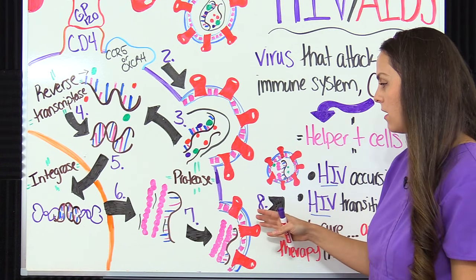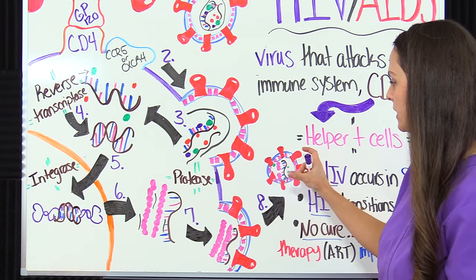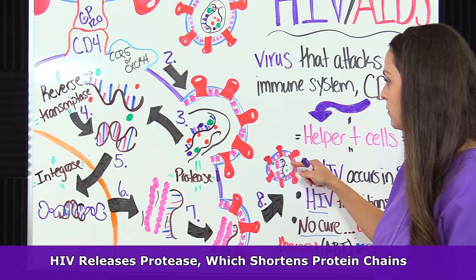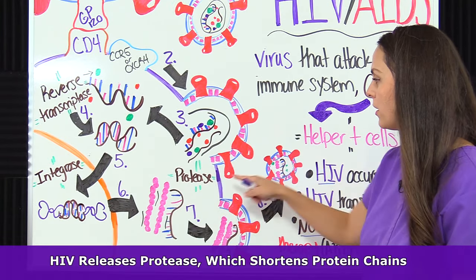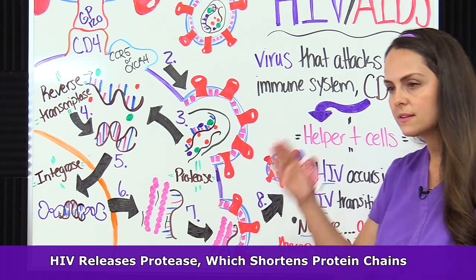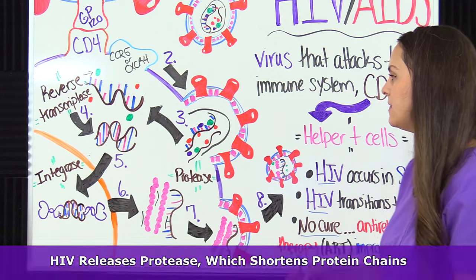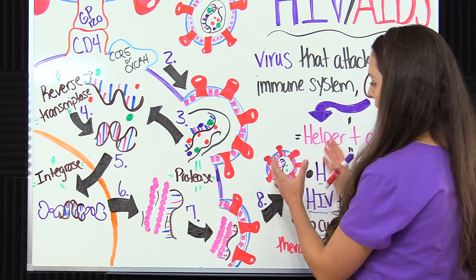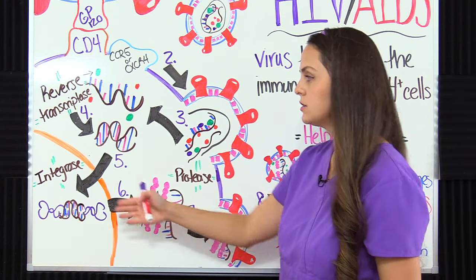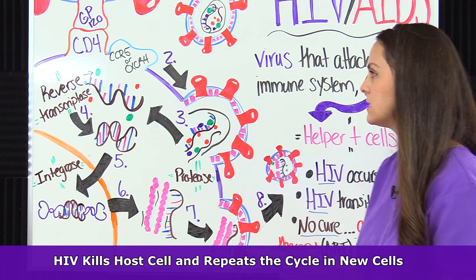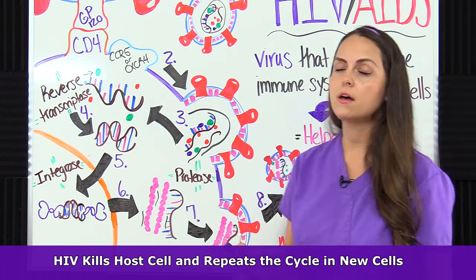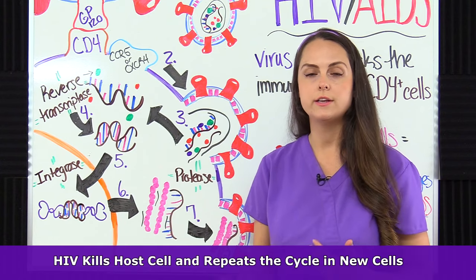Once it pops off, we have maturity. The new HIV material releases another enzyme called protease, which takes those long chains of proteins and cuts them shorter, helping with maturity of the HIV virus. Once this process is complete to the HIV's satisfaction, it will kill the host cell, and new HIV goes around to find new cells to infect — and the cycle repeats over and over.